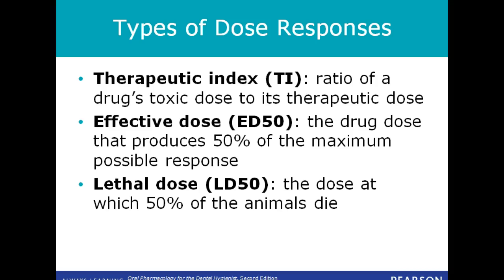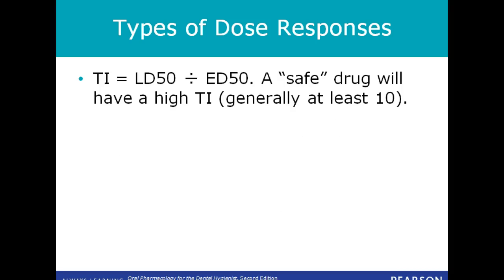The therapeutic index, or TI, is the ratio of a drug's toxic dose to its therapeutic dose. The effective dose, ED50, is the drug dose that produces 50% of the maximum possible response. The lethal dose, or LD50, is the dose at which 50% of the test animals die. TI, or therapeutic index, is equal to the lethal dose 50 divided by the effective dose 50. A safe drug will have a high TI, generally at least 10.